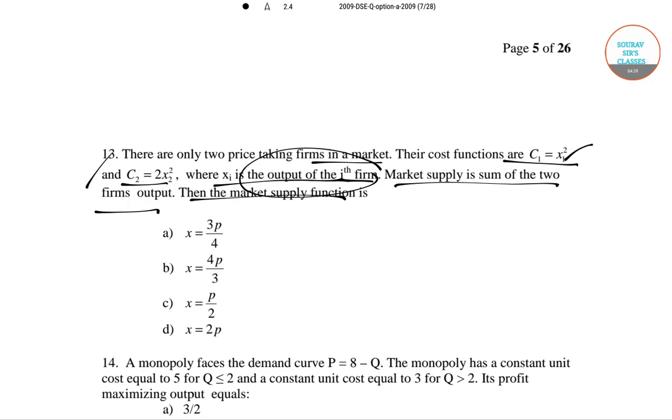We have the cost functions. Now the key is how to approach it. We have to be very conscious about all kinds of information. Here we have two price taking firms. Price taking means we have to use the concept of perfect competition. So in perfect competition we know that P equals MC.